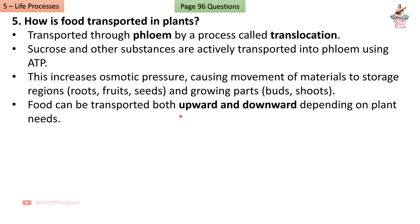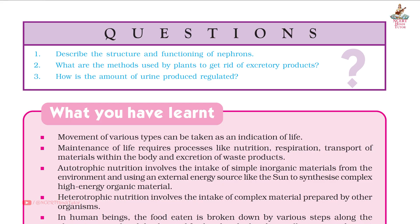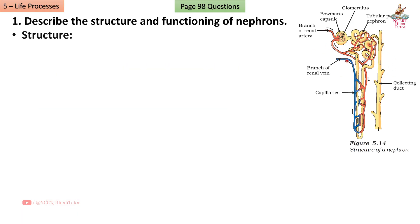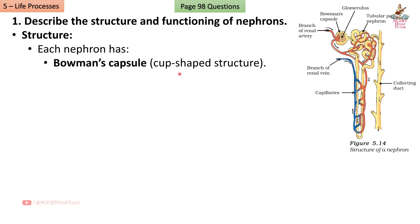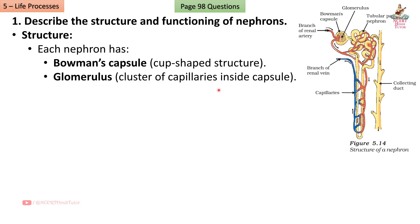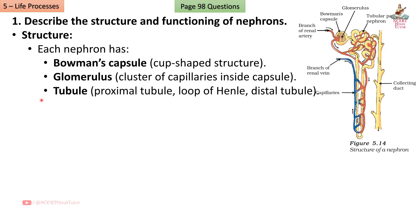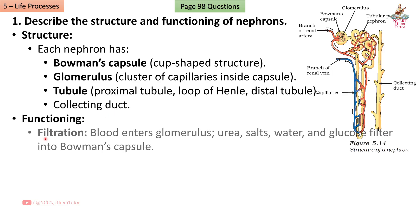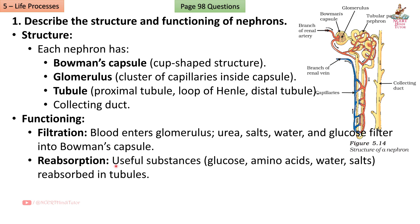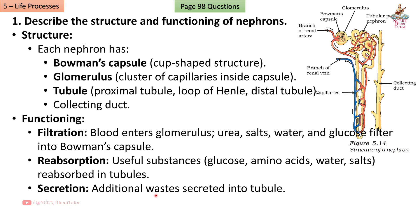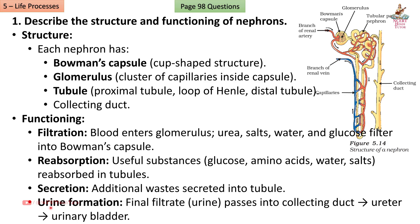Page 98, Question 1: Describe the structure and functioning of nephrons. Answer: Each nephron has a Bowman's capsule (cup-shaped structure), a glomerulus (cluster of capillaries inside the capsule), and a tubule (proximal tubule, loop of Henle, distal tubule, collecting duct). Functioning — Filtration: blood enters the glomerulus; urea, salts, water, and glucose filter into Bowman's capsule.